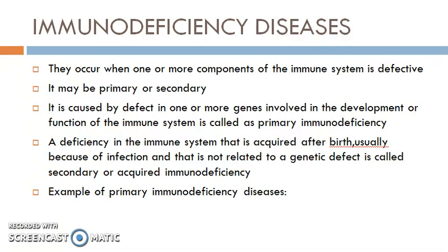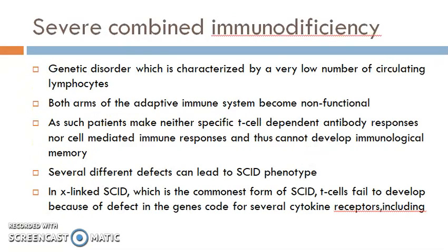An example of a primary immunodeficiency disease is Severe Combined Immunodeficiency (SCID). It is a genetic disorder characterized by a very low number of circulating lymphocytes, where both arms of the adaptive immune system become non-functional. As such, patients make neither specific T-cell dependent antibody responses nor cell-mediated immune responses.